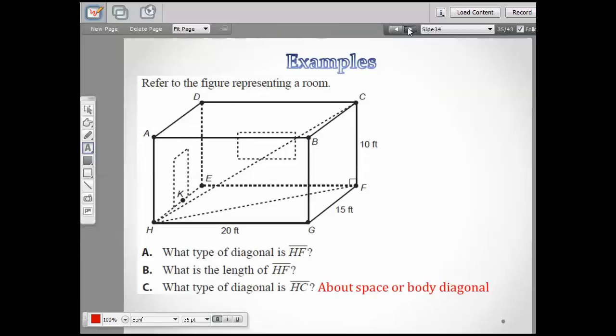What type of diagonal is HC? I just went ahead and wrote it in that one question. We called it a space diagonal, but it can also be called the body diagonal. And then right here is what we're talking about, H to C. When you go from one corner to the opposite corner, what is the length?